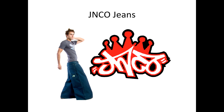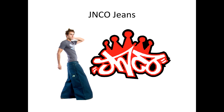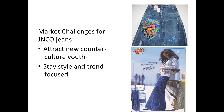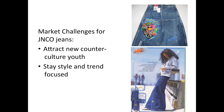Another option is JNCO jeans — JNCO stands for GenCo. If you're not familiar, they're huge wide-legged jeans that were really popular with skater punk kids in the 90s. How do you attract new counterculture youth while staying style and trend focused yet maintaining that signature brand? JNCO famously hired street artists to design their tag, and that crown logo was done by a famous street artist. How do you keep that counterculture youth spirit while attracting new consumers — getting kids in their tweens, teens, and 20s to want to buy this while maintaining some iconic brand identity?